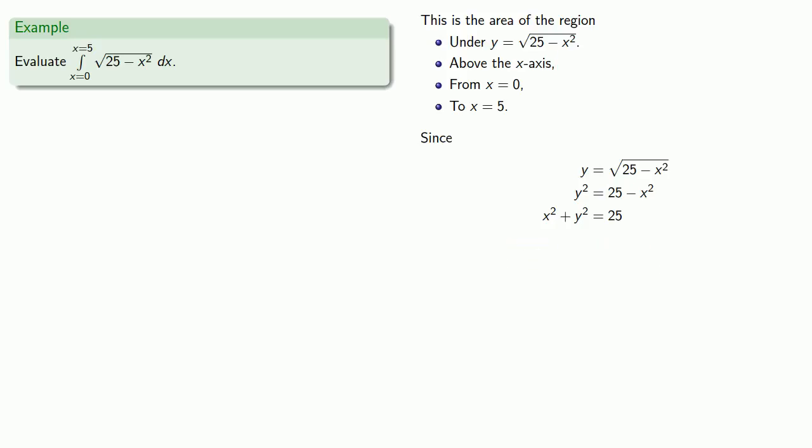The equation itself describes a circle with radius 5 centered at the origin. But because we're looking at the region under y equals square root of 25 minus x squared and above the x-axis, the curve is the upper half circle with radius 5, and the region itself is one quadrant of the circle.